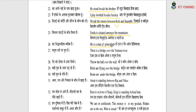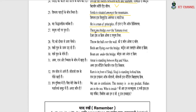'He is a man of principles.' 'There is a bridge over the Yamuna river' — a bridge is always over the river, never on the river. 'Throw the ball over the wall.' 'Birds are flying over the bridge' — the birds are above the bridge with no contact. When we use 'on,' there is contact — 'the book is on the table.' When we use 'over,' there is no contact from above.